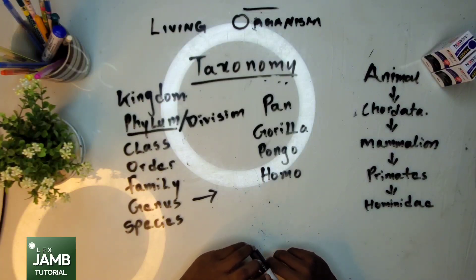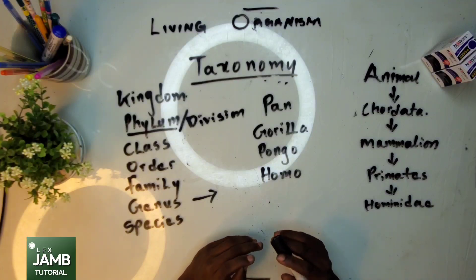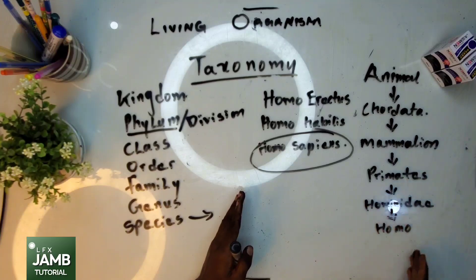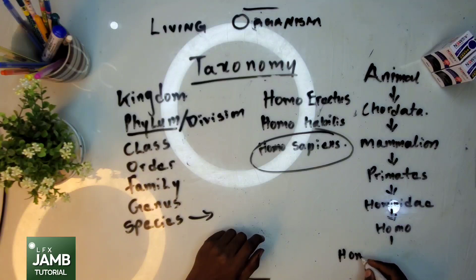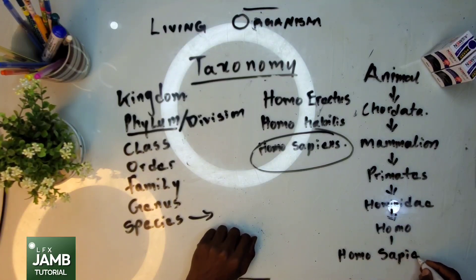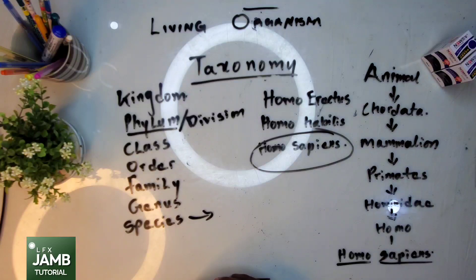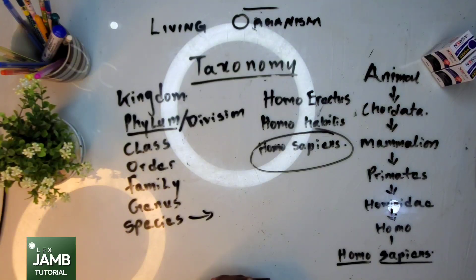The Homo genus includes species that are advanced and have cognitive ability. We the humans are named Homo sapiens. Note: Homo is our genus and sapiens is our species. This is the scientific name for humans, and that is the origin of the scientific name for every living thing. Homo sapiens appears to be the highest on the hierarchy list. Now you know your hierarchy in the taxonomy of living things.